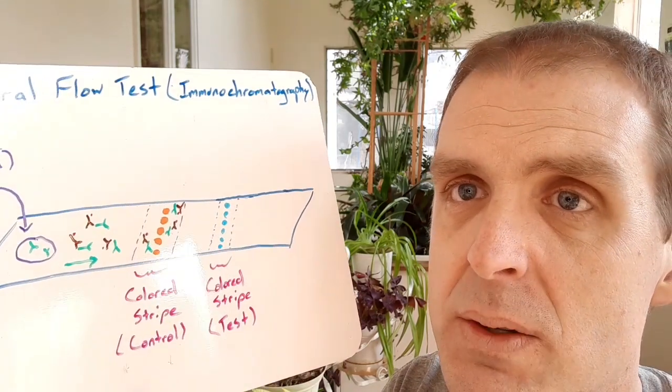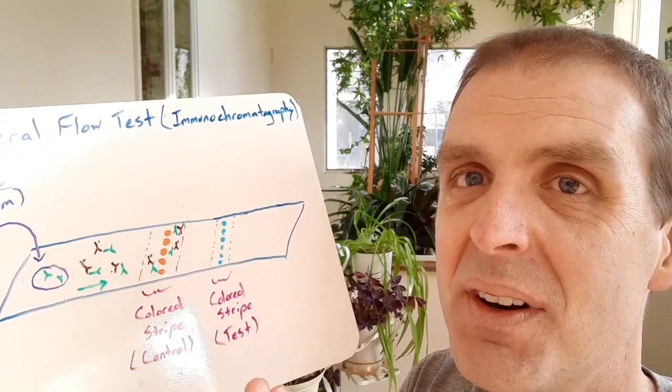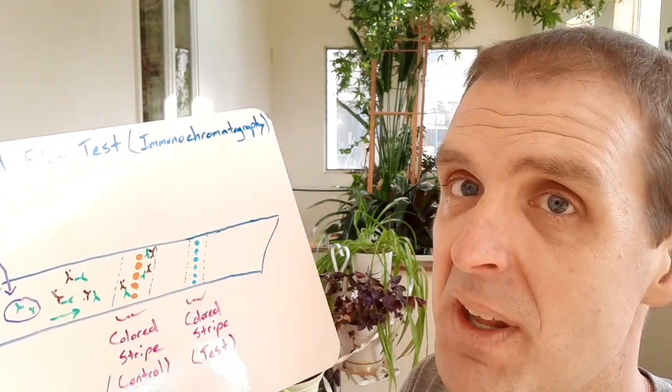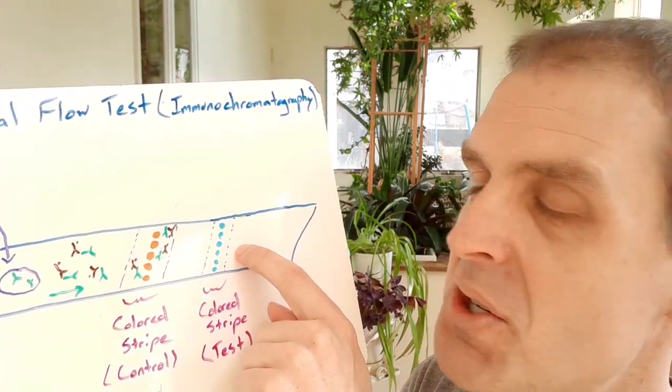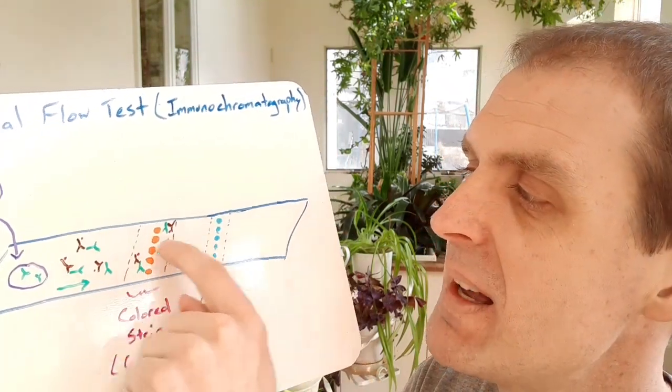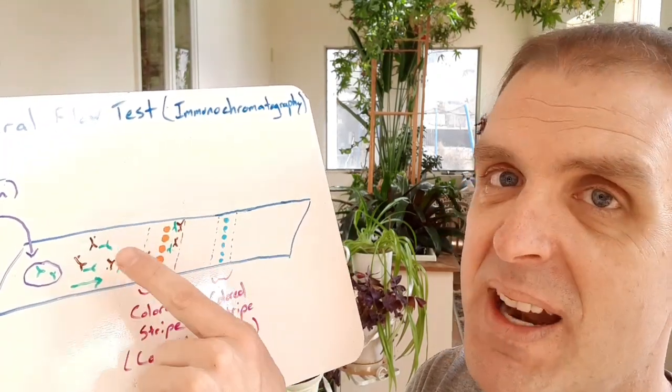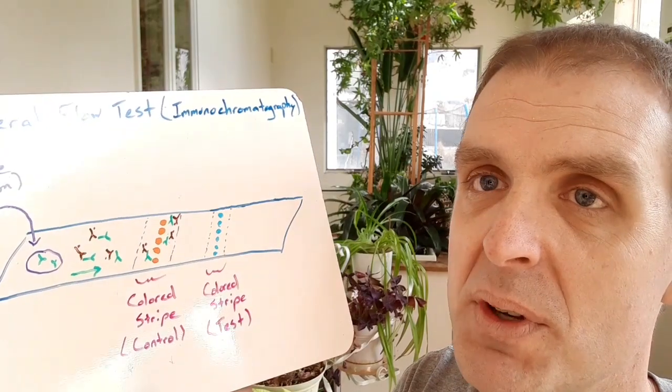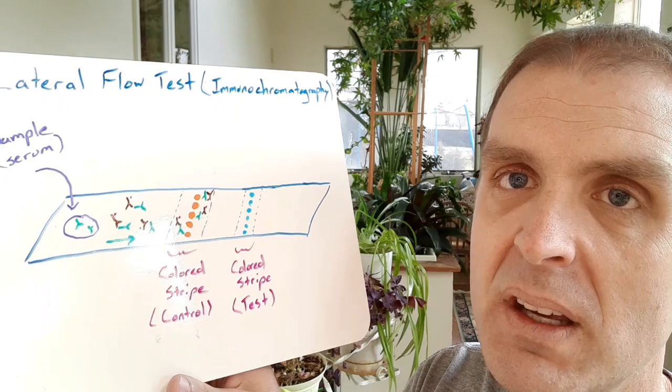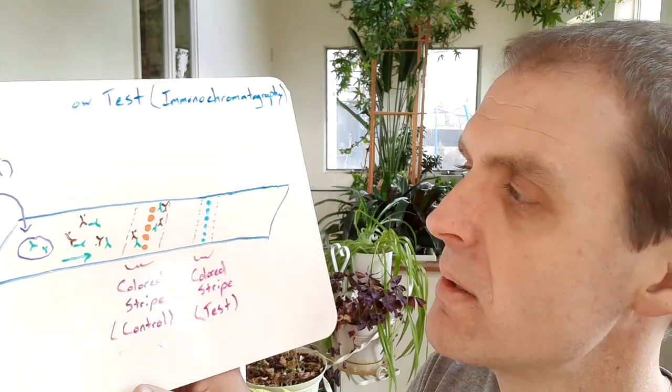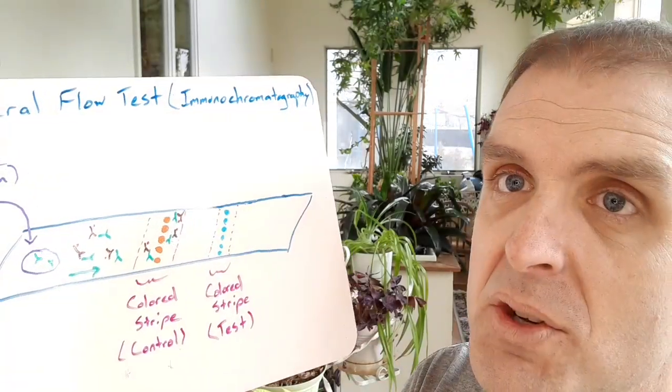Now on pregnancy tests, when they do this, a lot of times they have a minus sign if you're not pregnant and a plus sign if you're pregnant. So if you can imagine, we could set up this trap across this way on our thing, and it would be a minus sign or a plus sign if it was to let us know if you have coronavirus or not. So that's how you can get the two different minus or plus. Or in this version, you just have one stripe or two stripes.